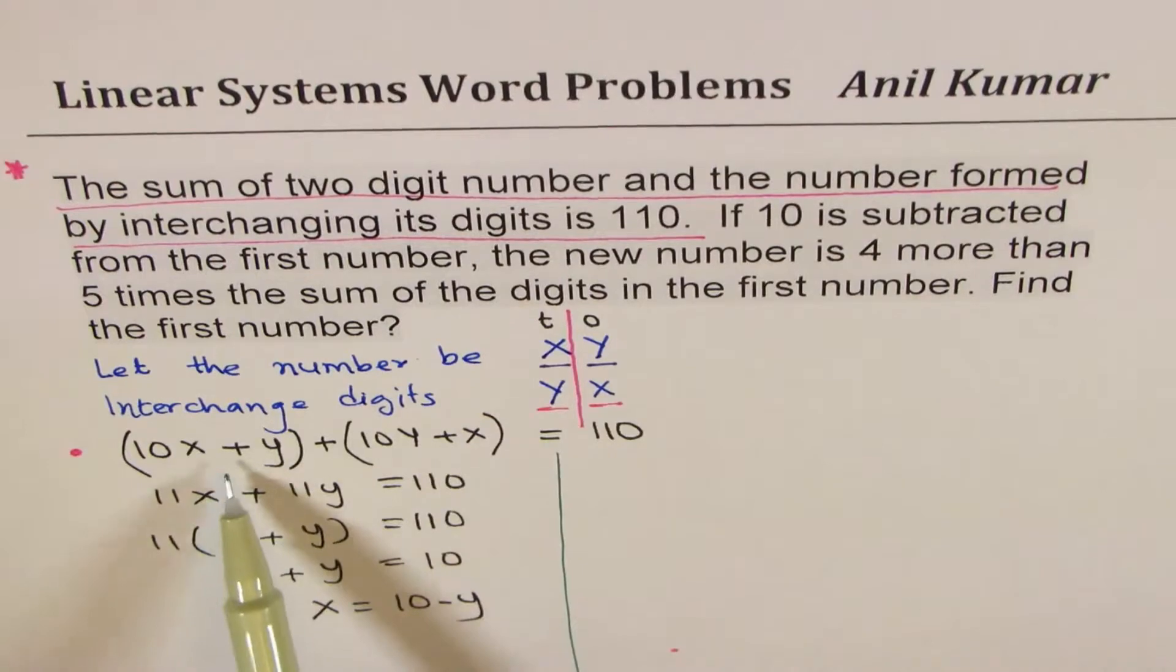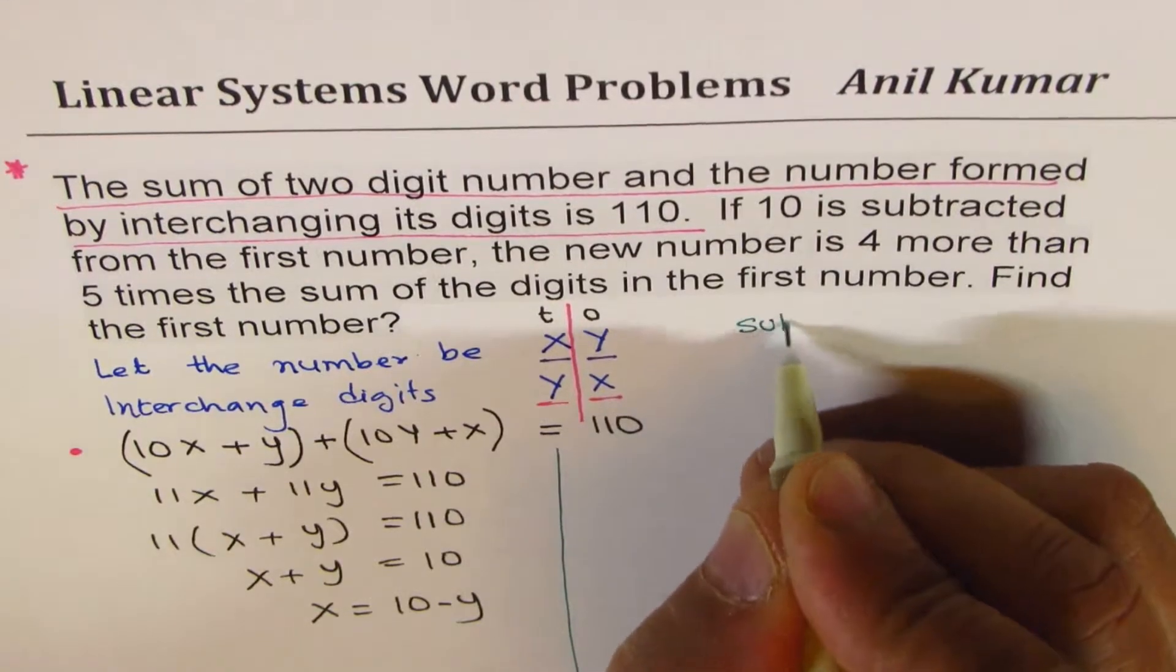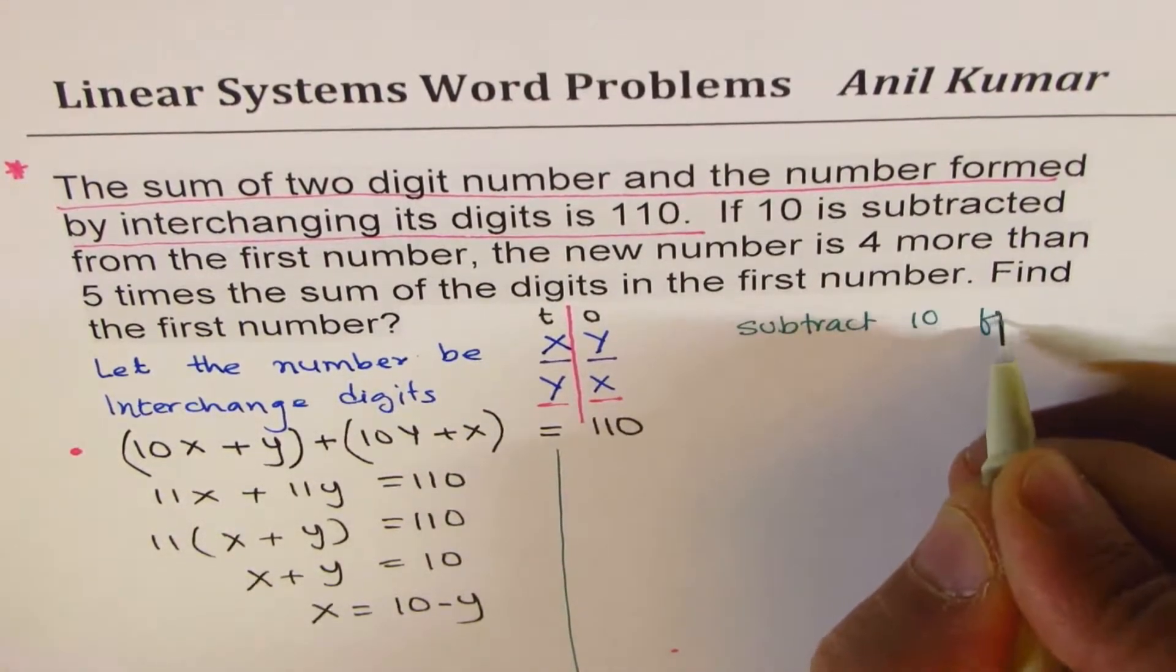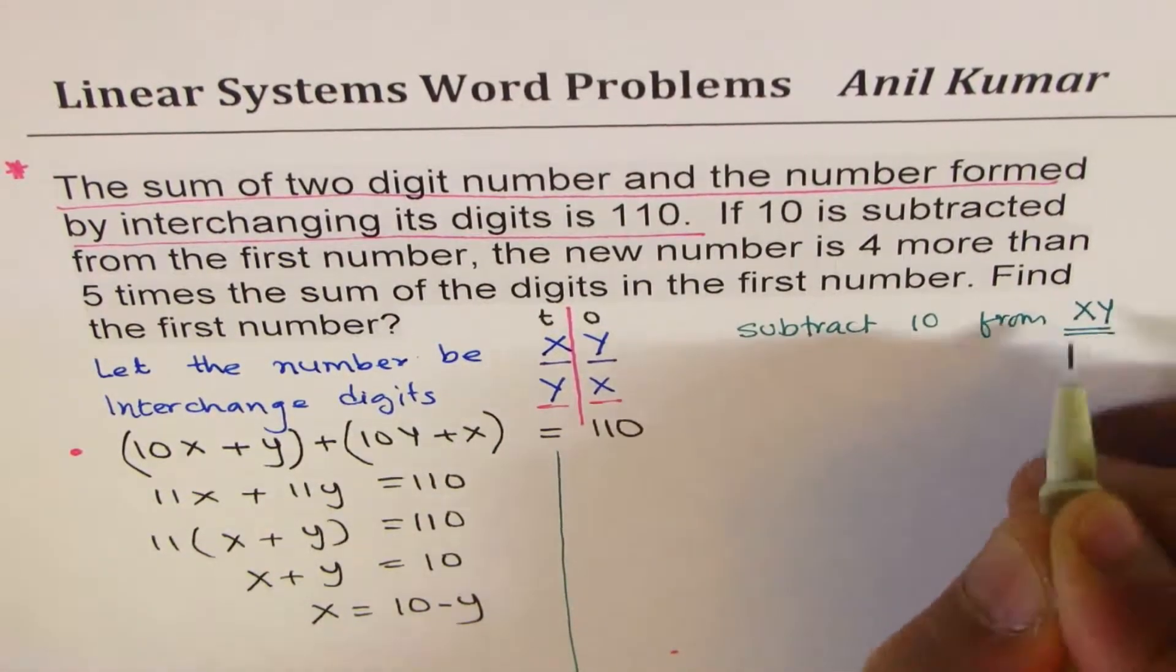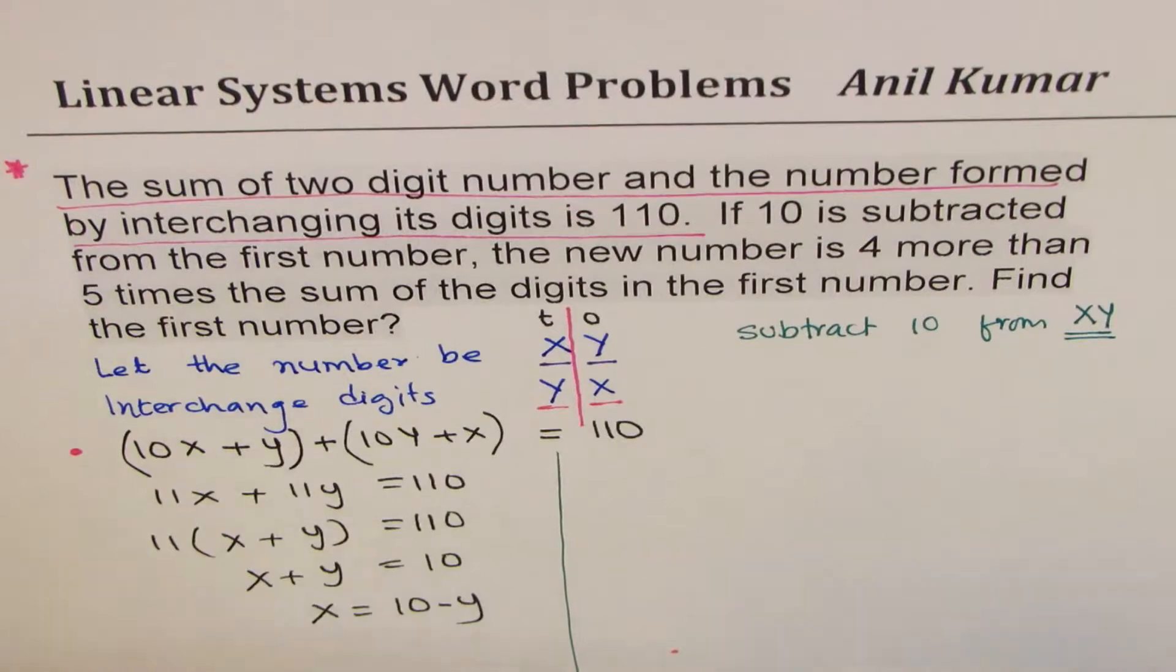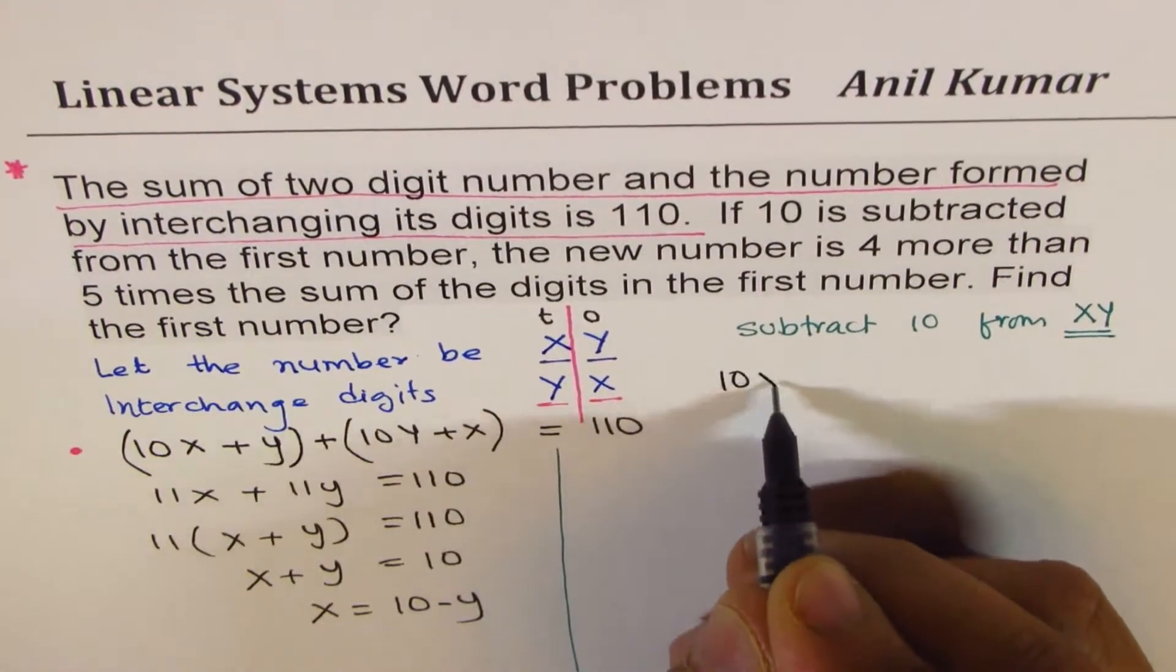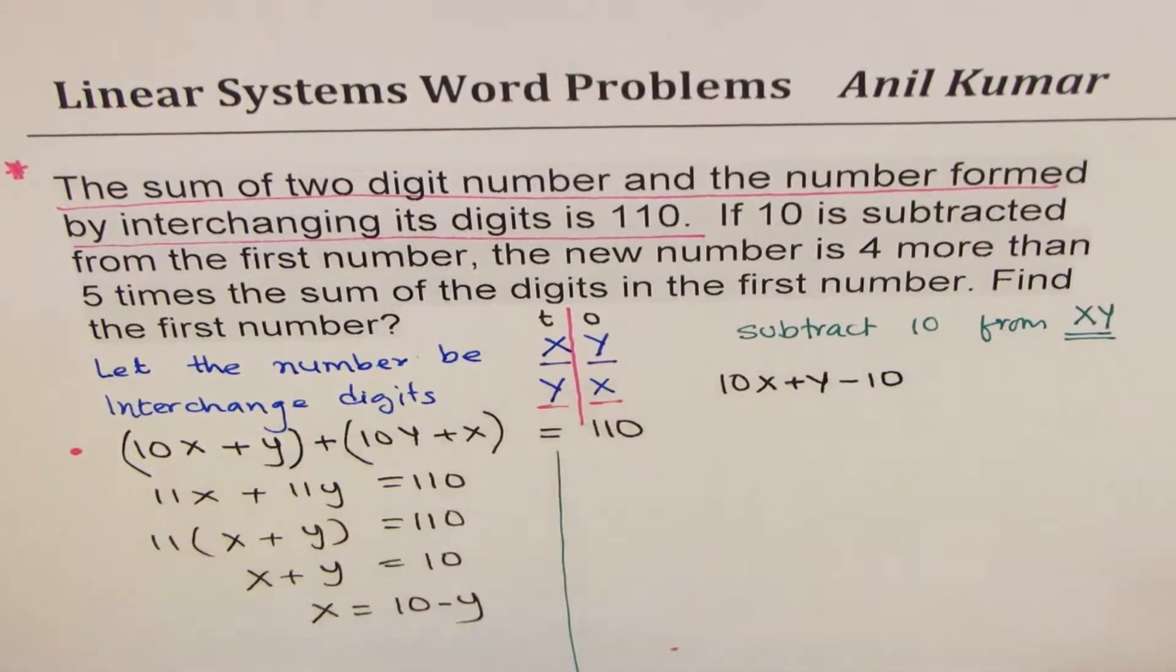So if we have to subtract 10 from here, so subtract 10 from this number, x, y. It means the value of the number is 10x plus y, take away 10. That is what it means.